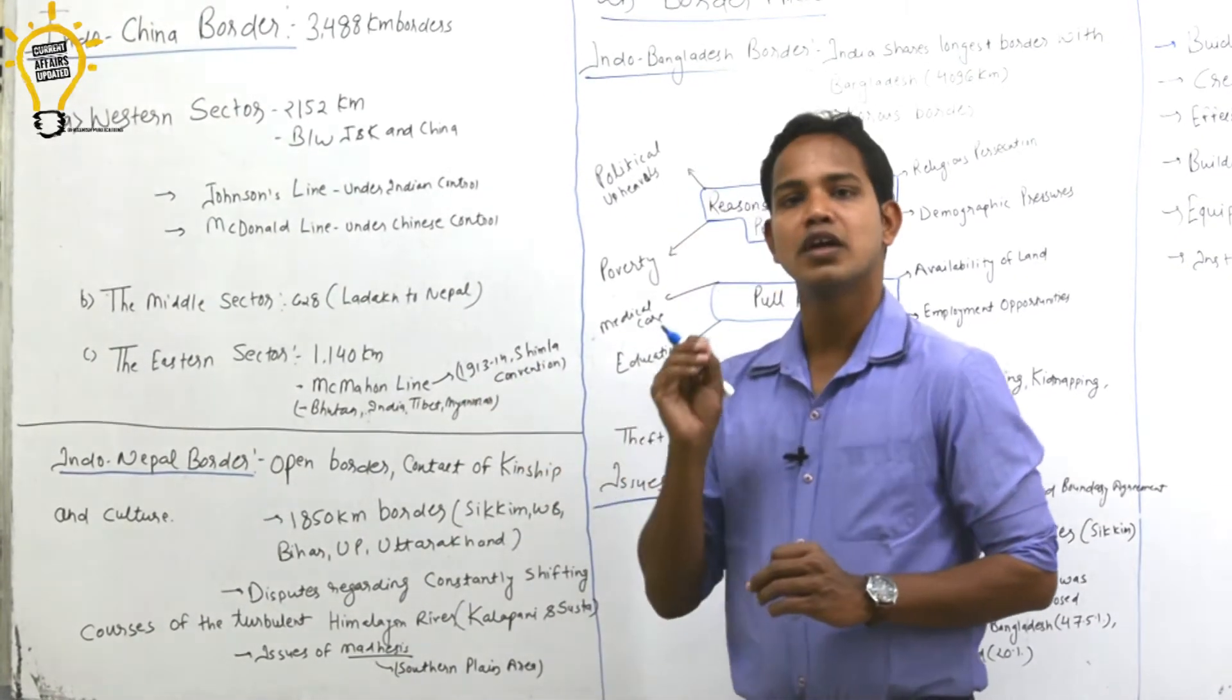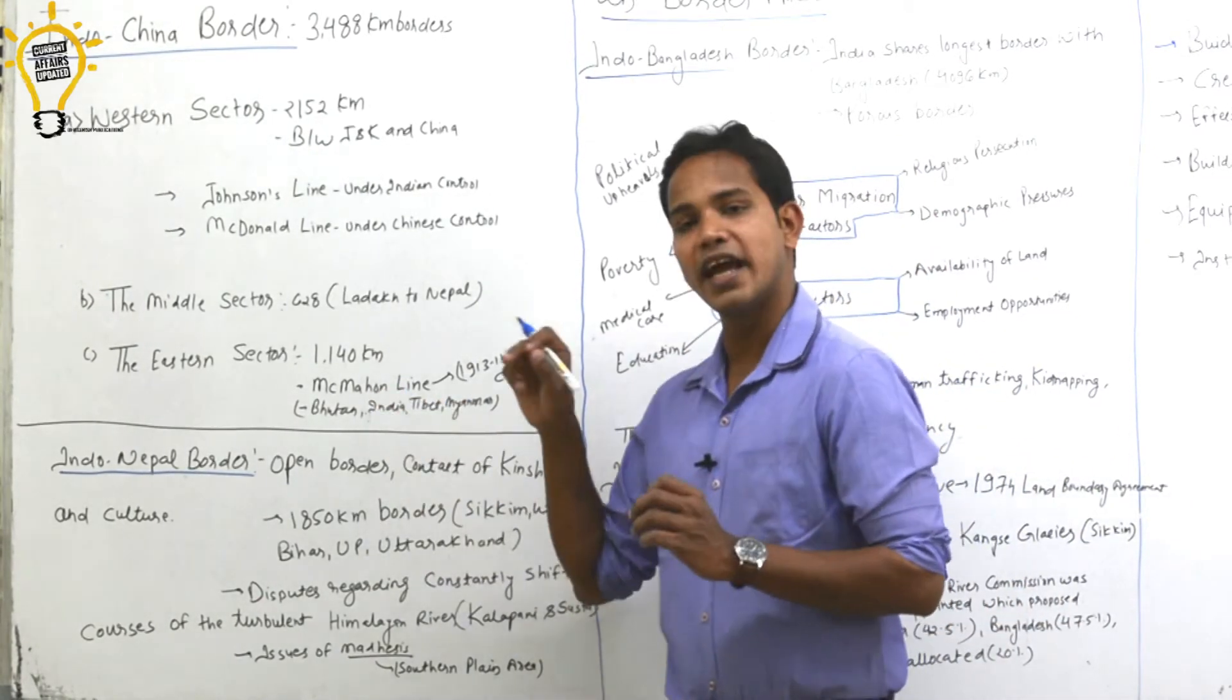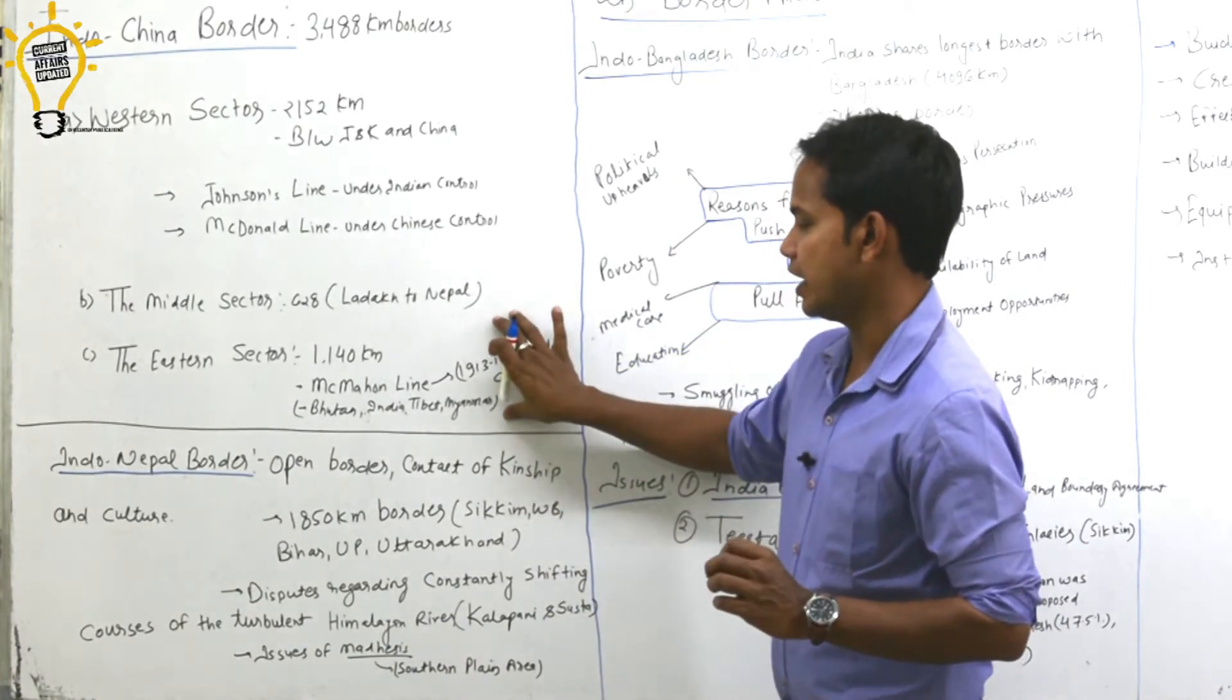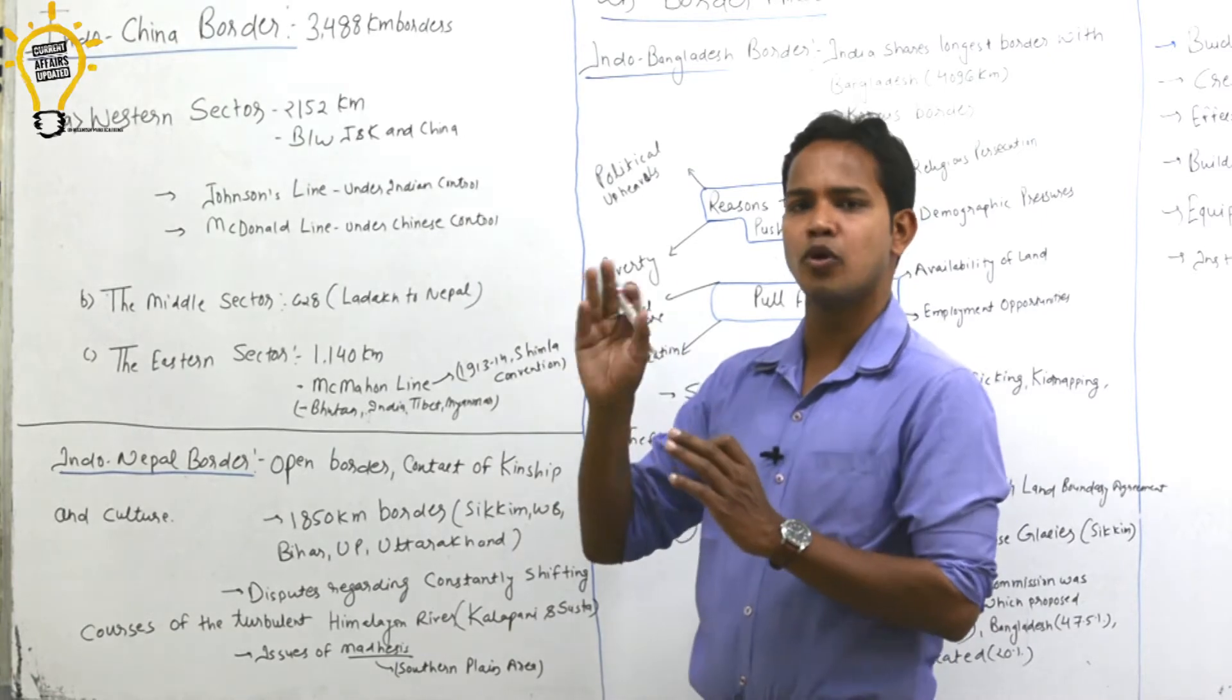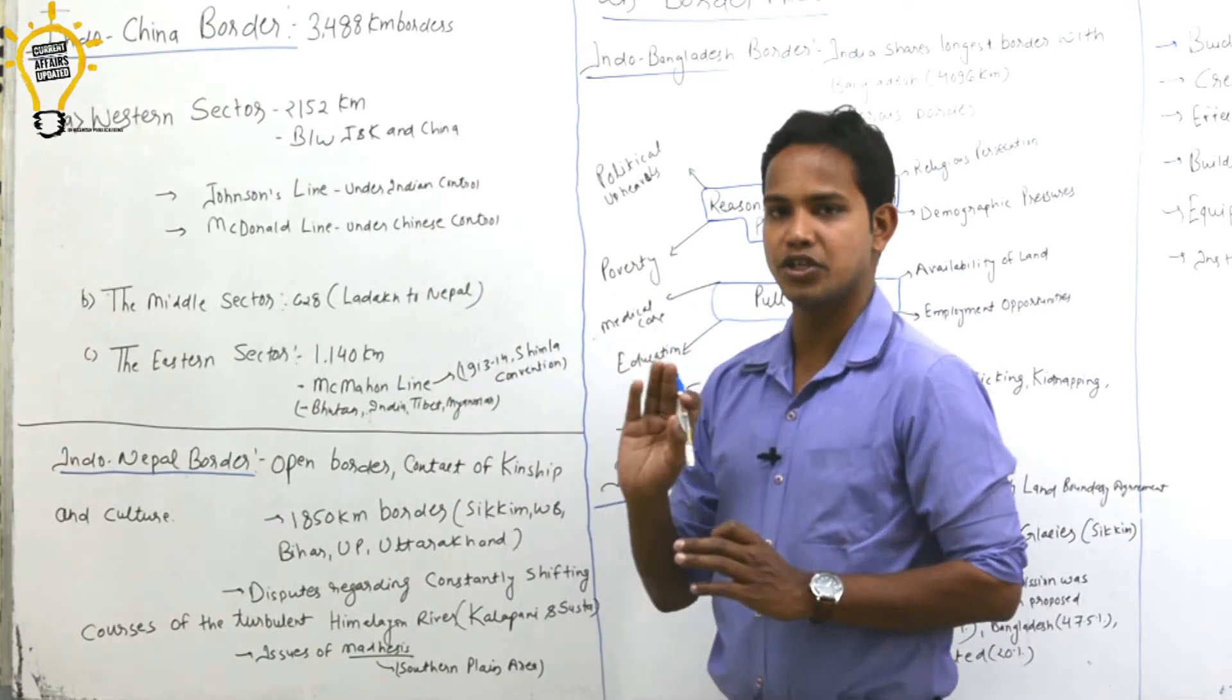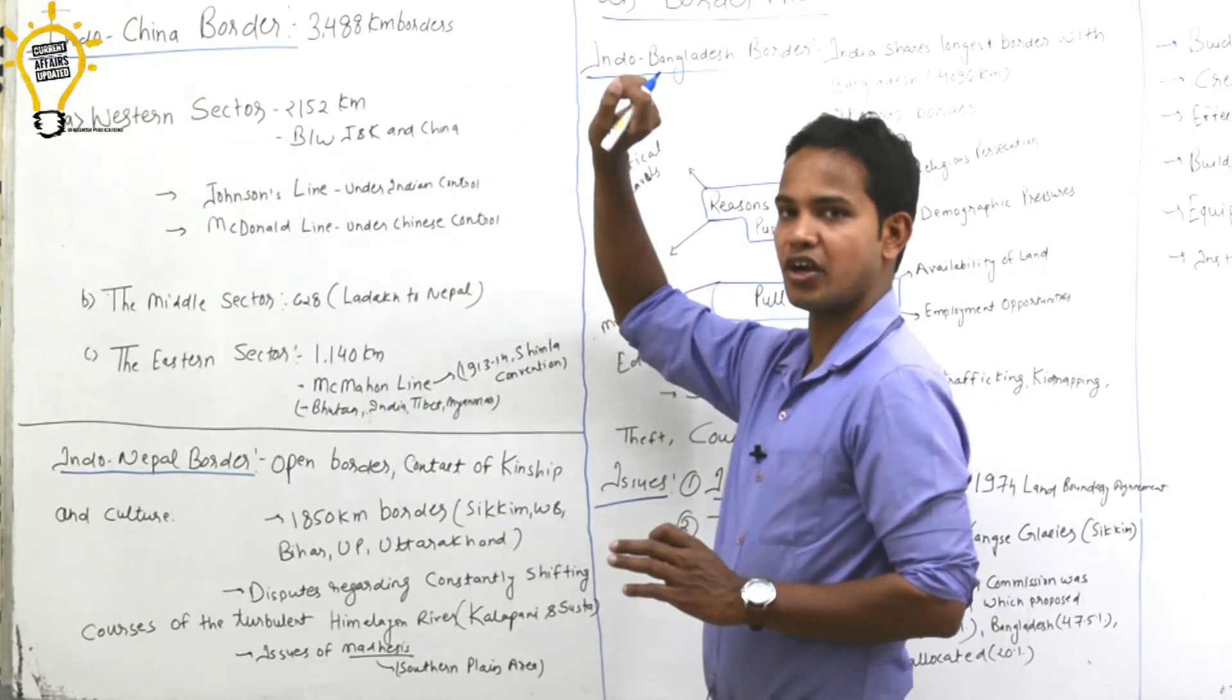China does not accept the McMahon Line, disagrees with it. Whereas for us, McMahon Line clearly defines the India-China border. There isn't much issue with this line. The basic issues are mainly in the western sector. Otherwise there's no major issue.